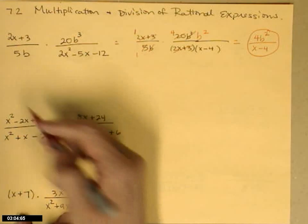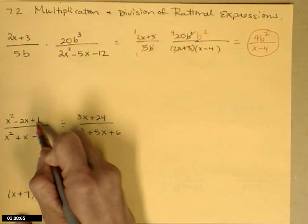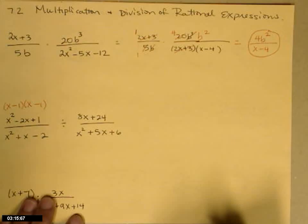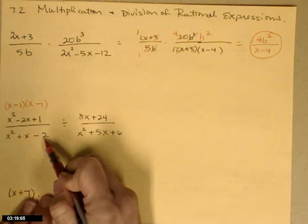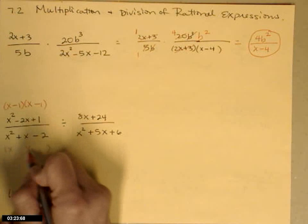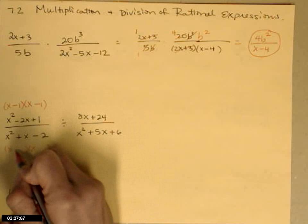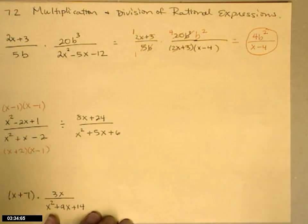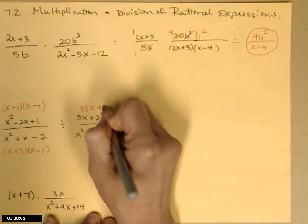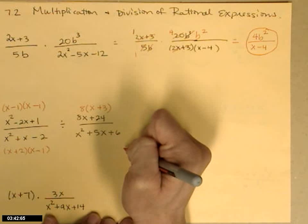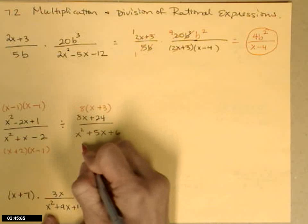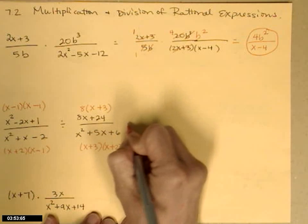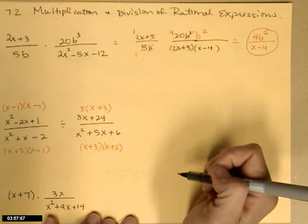So x squared minus 2x plus 1 is a trinomial with leading coefficient 1 — factors of 1 that add to give negative 2, so x minus 1 times x minus 1. If you need to review factoring, please do so. The denominator of that same fraction: factors of 2 that subtract to give 1, so x plus 2 and x minus 1. Don't forget we're going to flip in a second. Then 8x plus 24 — factor out the 8, leaving behind x plus 3. And the denominator of the other fraction: factors of 6 that add to give 5, so x plus 3 times x plus 2. When I rewrite this, I write with the factors and flip the second fraction, changing my operation to multiplication.